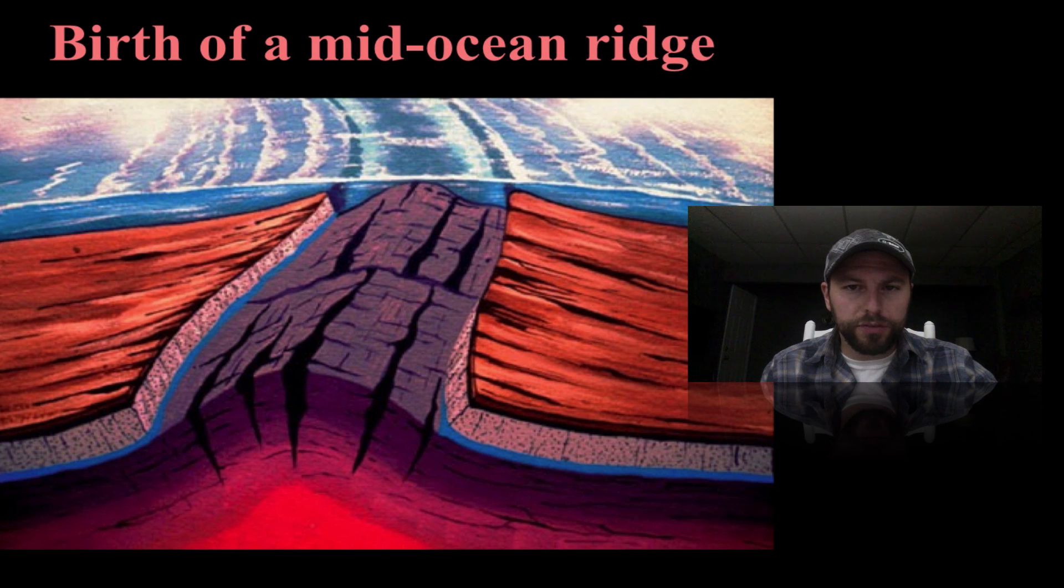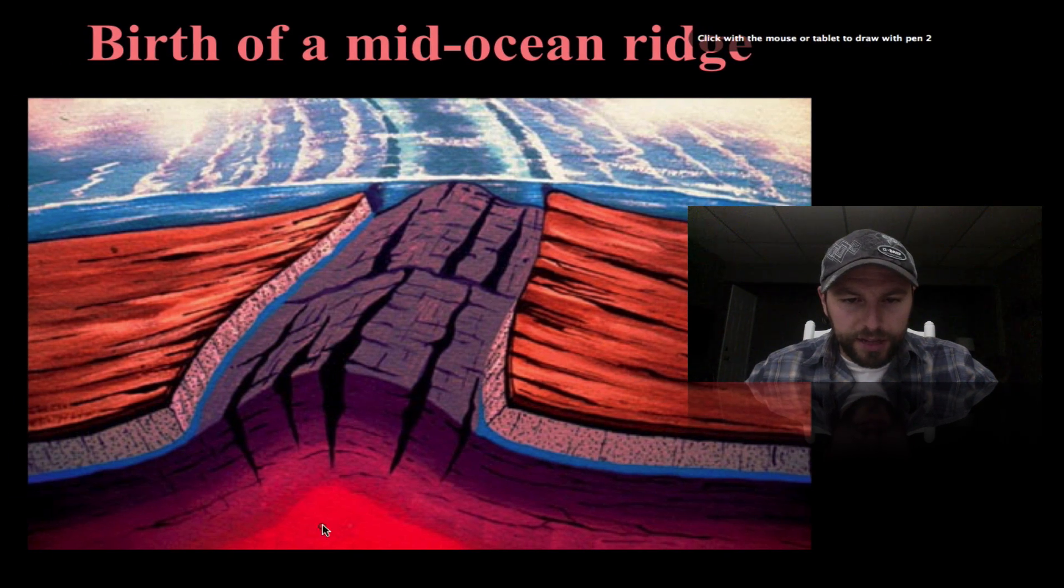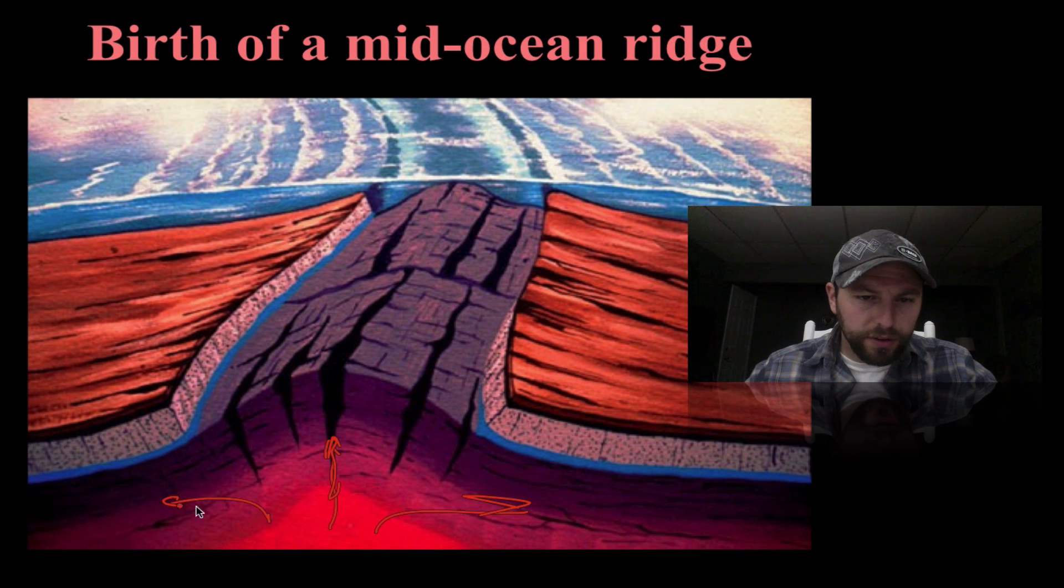Here's a mid-ocean ridge: same thing, we have our asthenosphere with magma pushing up and the convection cells within that asthenosphere pushing that landmass apart.